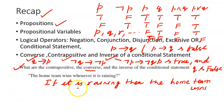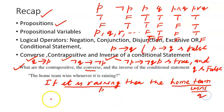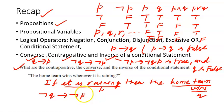The contrapositive is ¬q implies ¬p, which translates to: 'If the home team does not win, then it is not raining.' The converse is q implies p, which translates to: 'If the home team wins, then it is raining.' You can pause the video and try writing these yourself.